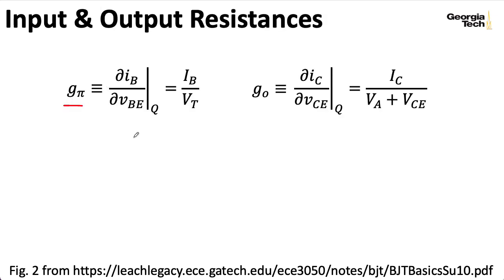Okay, so we've defined an input conductance G pi and an output conductance G naught. But we're not really used to thinking about resistances in terms of conductances. We're used to thinking about them in terms of resistances. So let me define an input resistance R pi. That's just the reciprocal of our input conductance. So that's just VT over IB. And I'll define an output resistance R naught. That's just 1 over G naught. And that's VA plus VCE over IC.